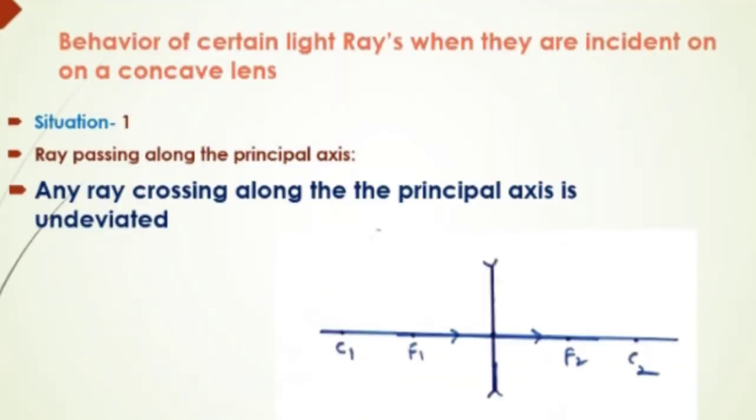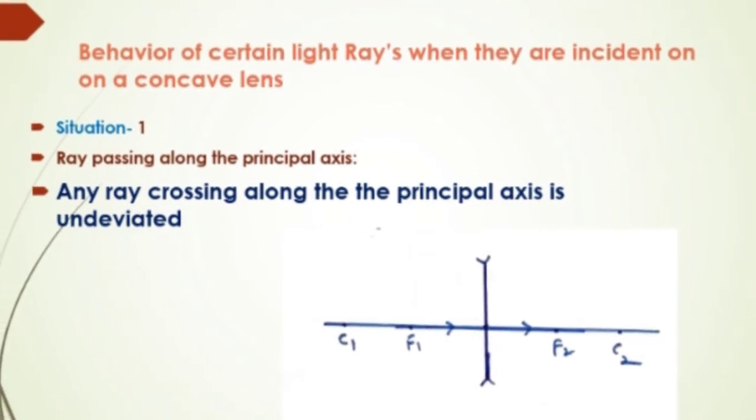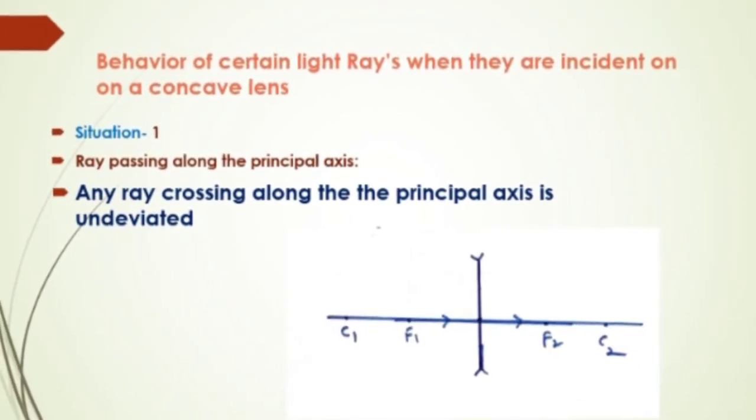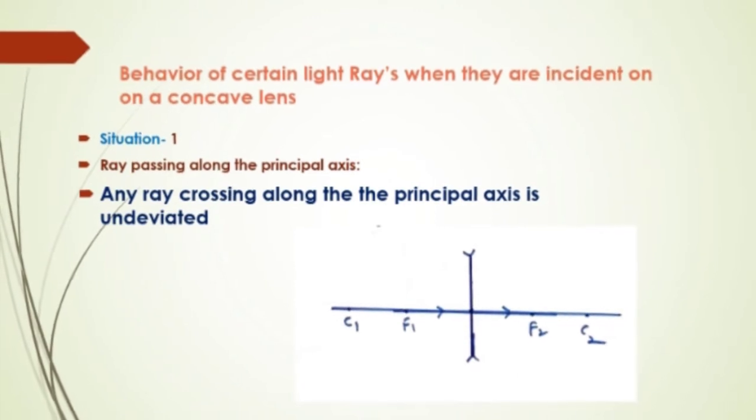These are the symbols for concave lens. Rule 1: Any ray crossing along the principal axis is undeviated after refraction.